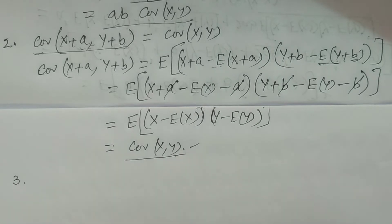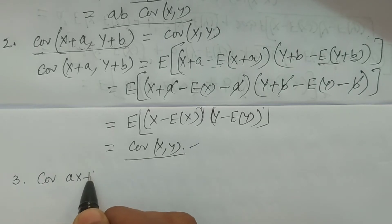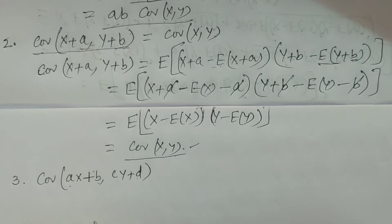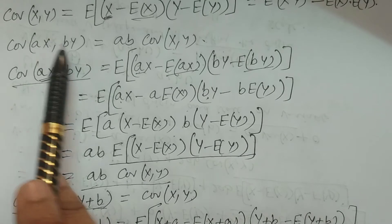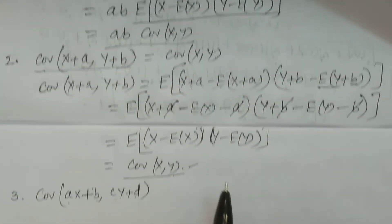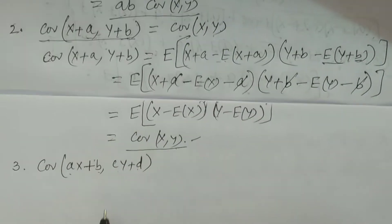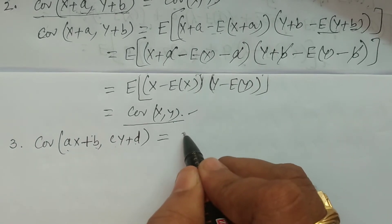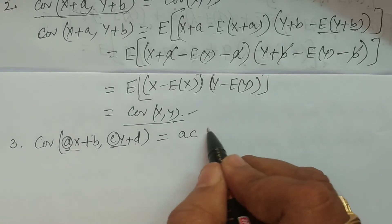Property number three: covariance of (ax plus b) and (cy plus d), where a, b, c, d are constants. Using properties one and two together — adding constants b and d does not affect covariance, and the multipliers a and c factor out — the result is ac times covariance of x, y. You can verify this proof yourself using the same approach.